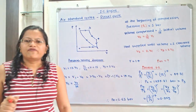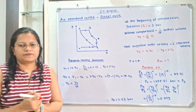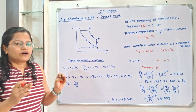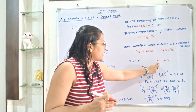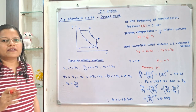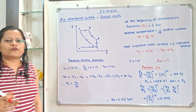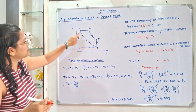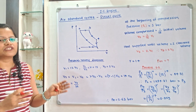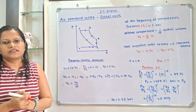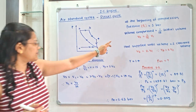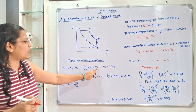Gamma is given as 1.4 and we have to find out the mean effective pressure. The formula is: work done equals swept volume multiplied by mean effective pressure, which equals the area under process 2 to 3, plus the area under process 3 to 4, minus the area under process 1 to 2. To calculate these areas, we need to find the pressure and volume at each point. Given data: V1/V2 = R = 15.